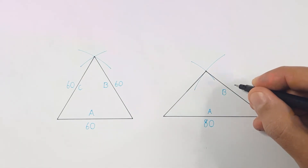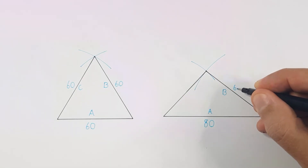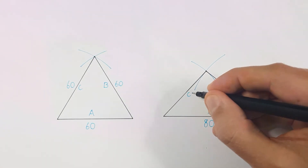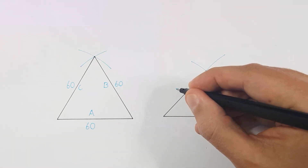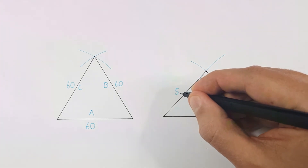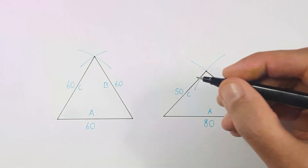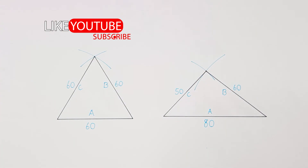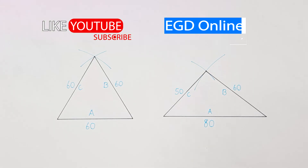I will label these two sides as B and C. You can also add the measurements if required. If you found the video helpful give it a thumbs up and don't forget to stop by our Facebook page.